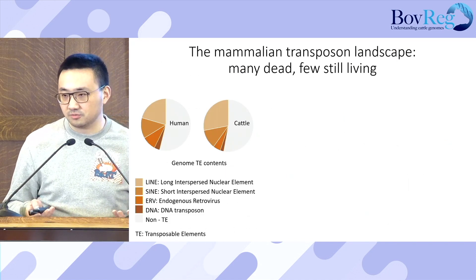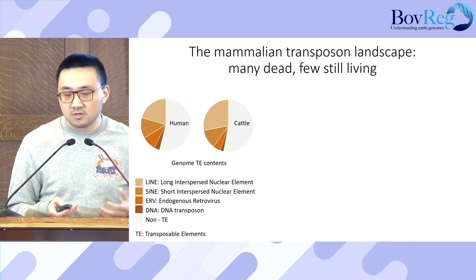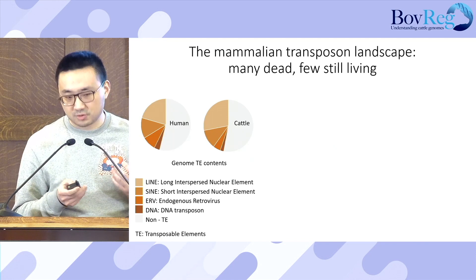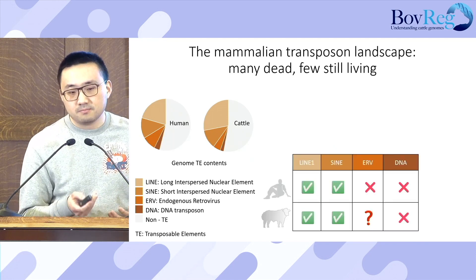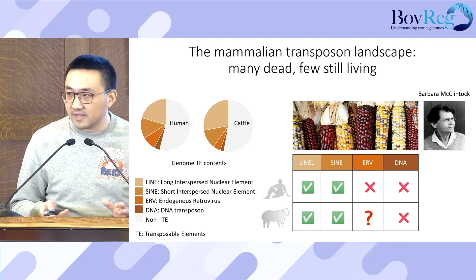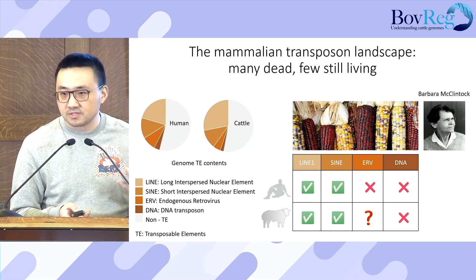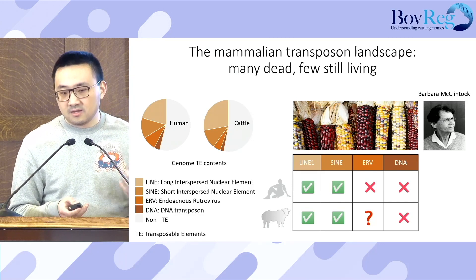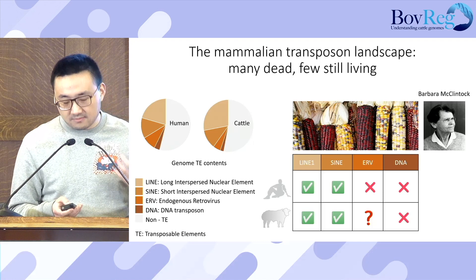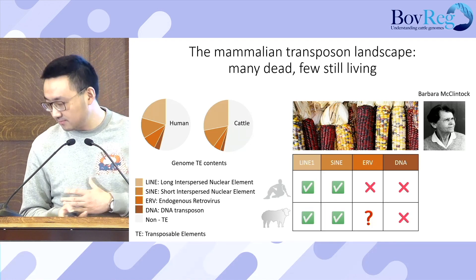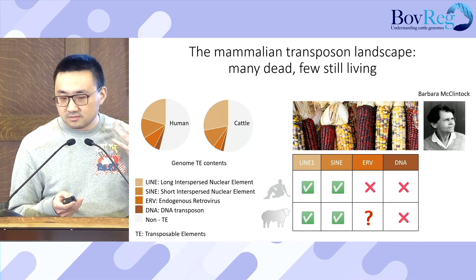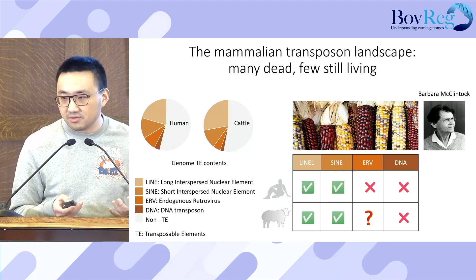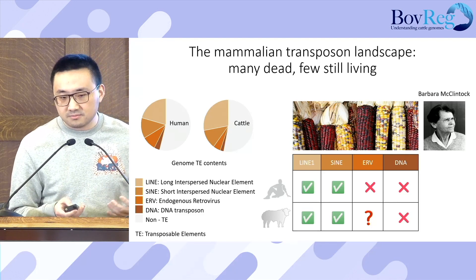Half of the typical mammalian genome is composed of repetitive elements, of which most are selfish transposable elements. Most transposable elements are no longer able to move because of host silencing mechanisms and accumulation of mutations. However, as known since McClintock, the mobilization of still-active mobile elements can generate genetic polymorphism and cause disease.